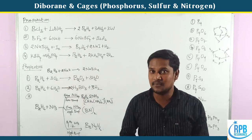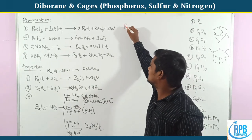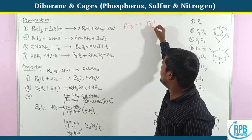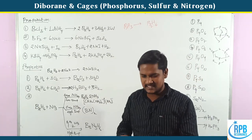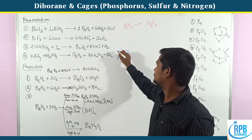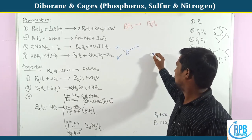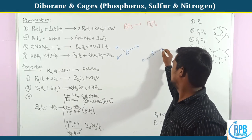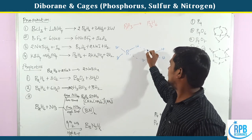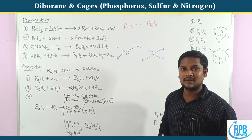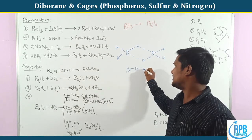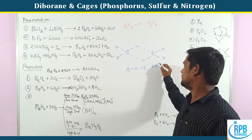So first one, that is diborane. We know that diborane is the dimeric form of BH3. So BH3's dimeric form is diborane. Let's say diborane has a structure of B2H6. Another mode of BH3: we render two BH3 molecules into combination, forming two banana bonds and two BH3 bridged bonds.